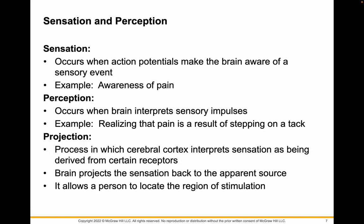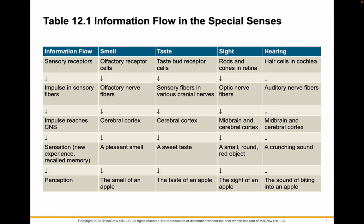Sensation occurs when action potentials make the brain aware of a sensory event — so you realize there's pain. Perception is when the brain interprets what that pain is, such as that you stepped on a tack. Projection is the process where the brain interprets the sensation and projects it back to the apparent source, so you can locate where that pain is.